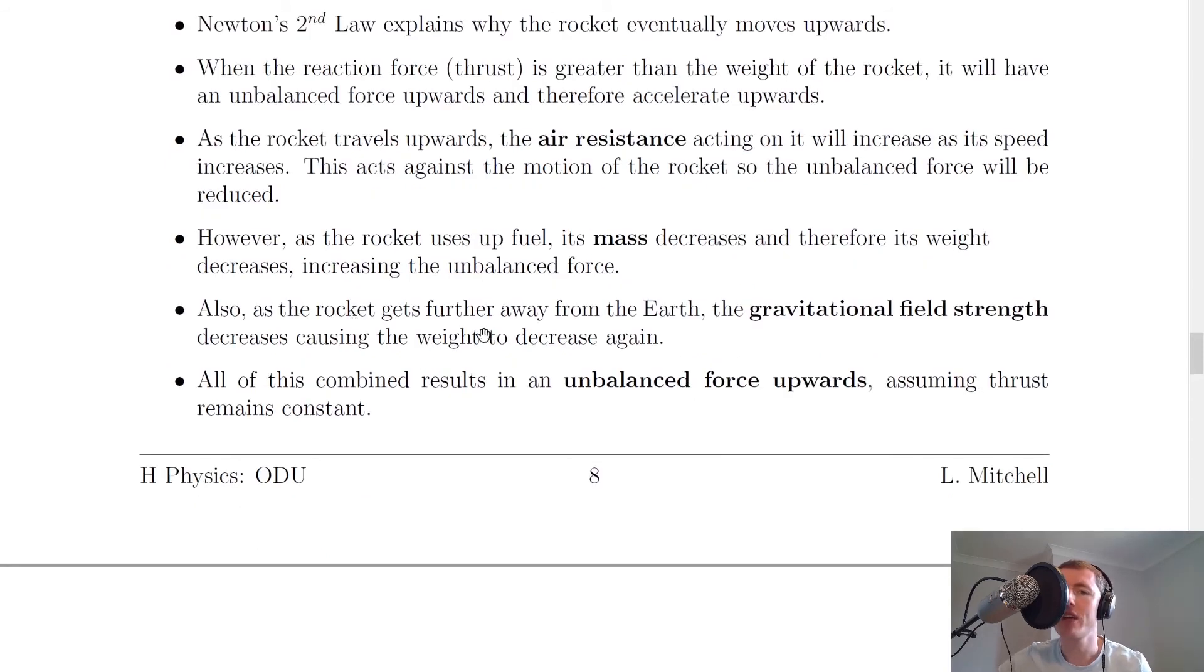Also, as the rocket gets further away from the earth, the gravitational field strength decreases, causing the weight to decrease again. So again, from the equation W equals mg, it's not m that's decreasing this time, it's actually g that also decreases. So the unbalanced force upwards must increase.